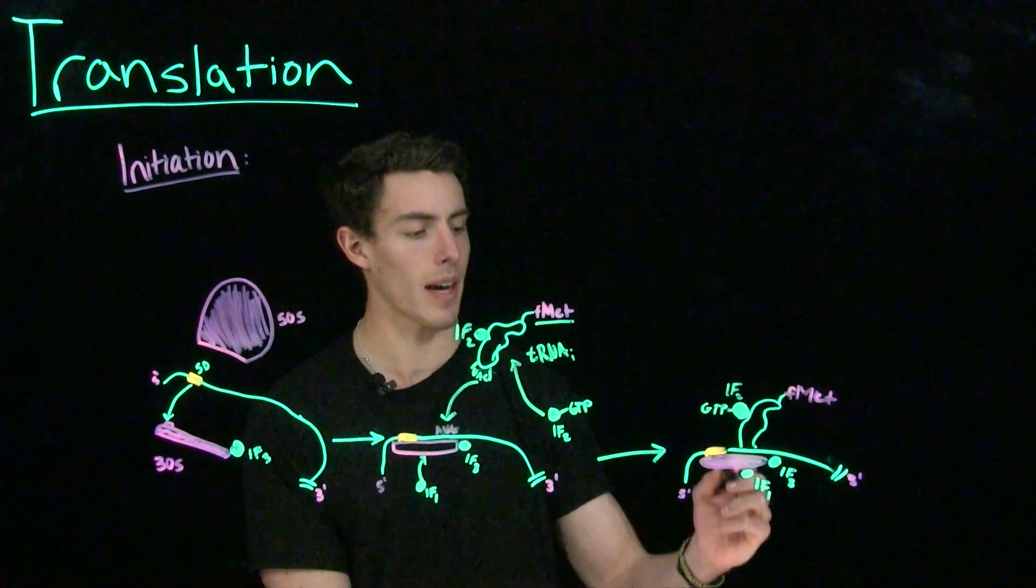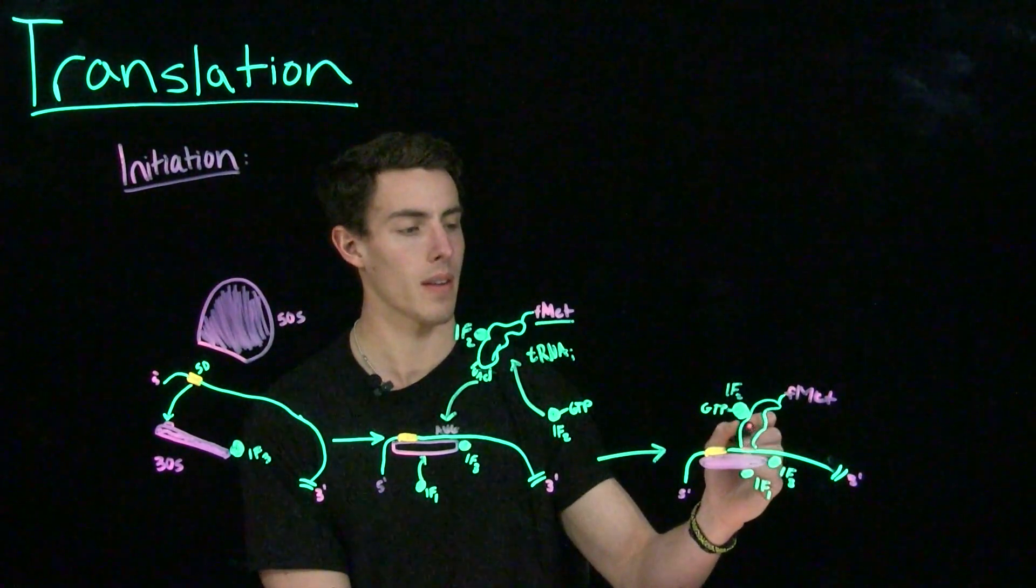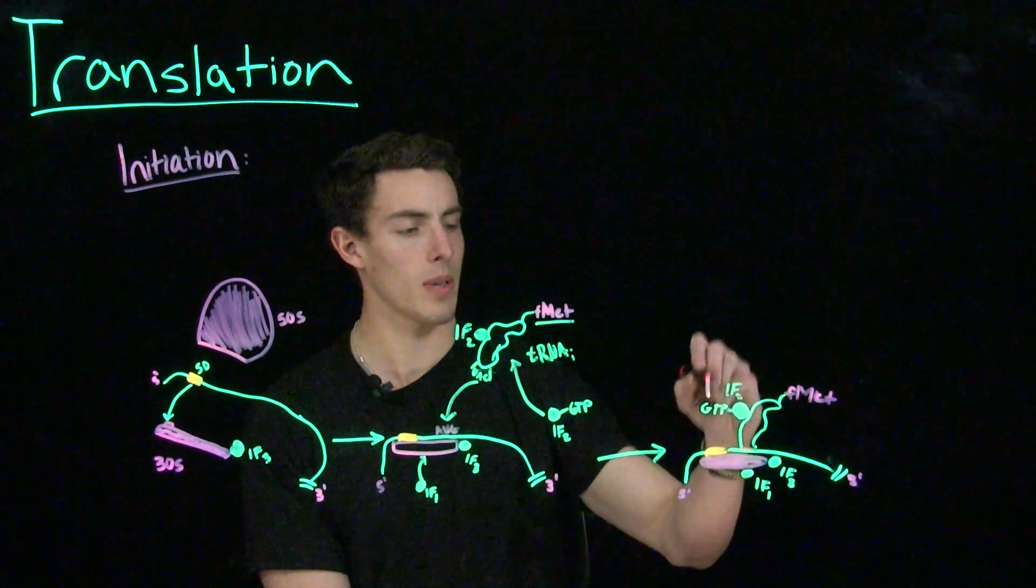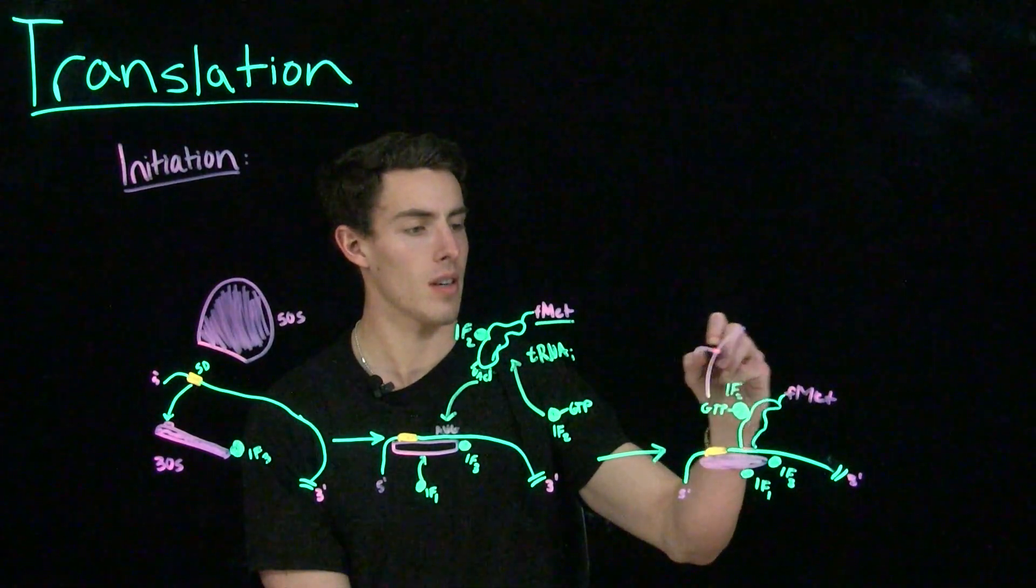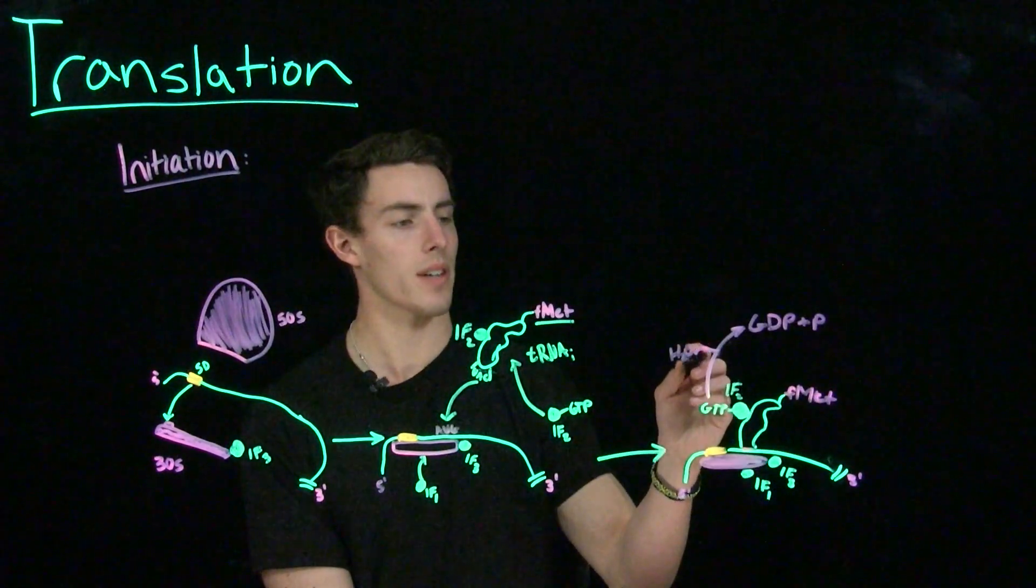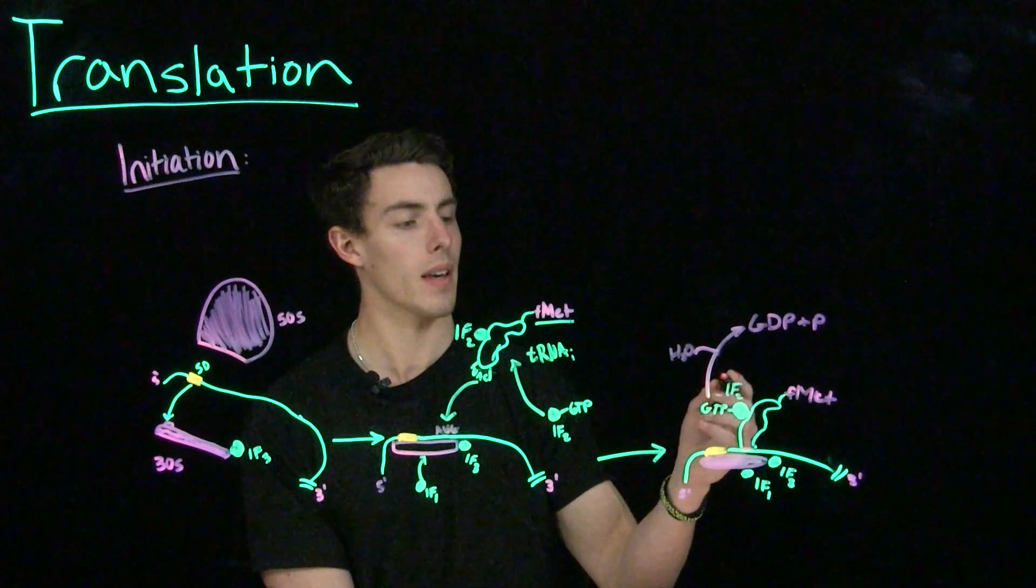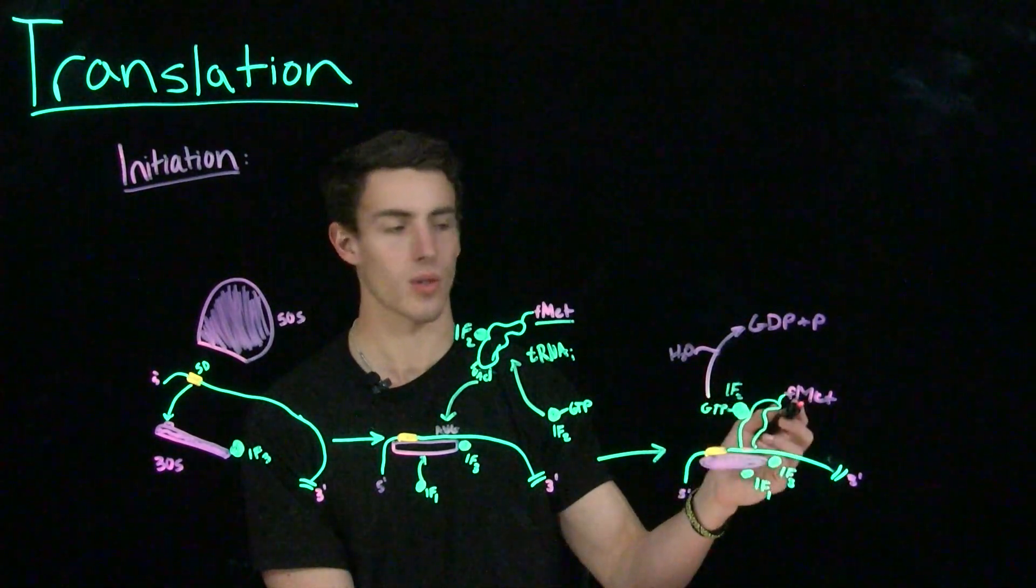So roughly around the time that IF1 binds, our initiator tRNA will have found our start codon, which will cause GTP to hydrolyze into GDP and a phosphate. This GTP hydrolysis, much like ATP hydrolysis you may have seen in BIO1, is going to provide energy for us to start translation.